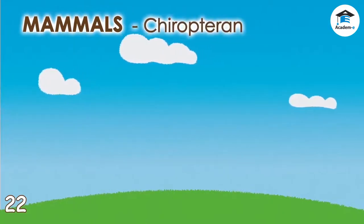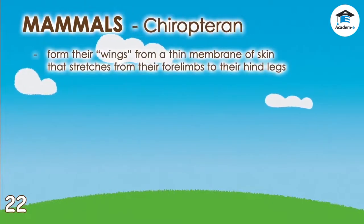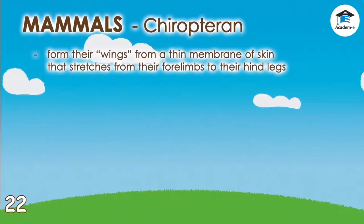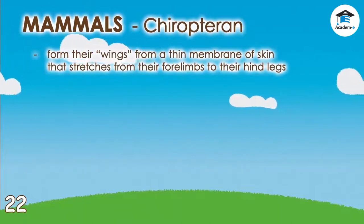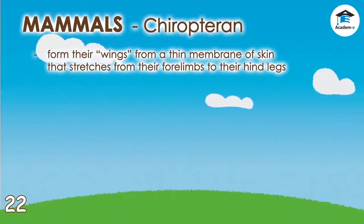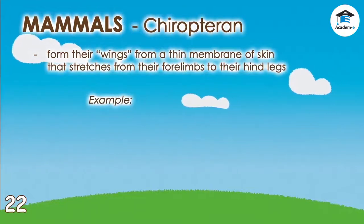Chiroptera are flying mammals. They form their wings from a thin membrane of skin that stretches from their forelimbs to their hind legs. The only mammal that can fly is the bat.